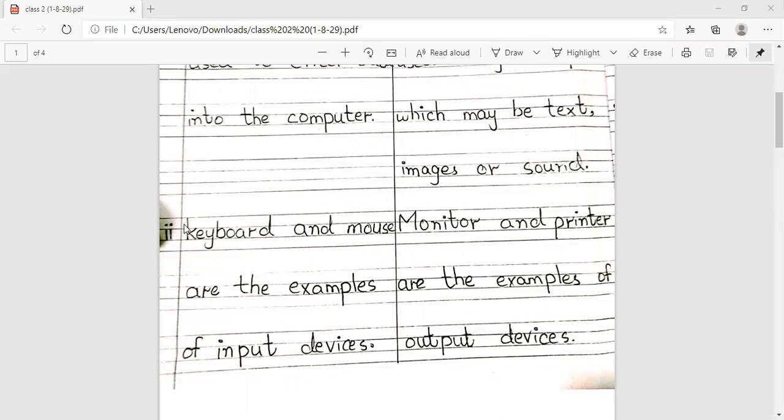Second, monitor and printer are the examples of output devices. For example, what we are doing is showing our output on the screen. If we want to print, we can use the printer.